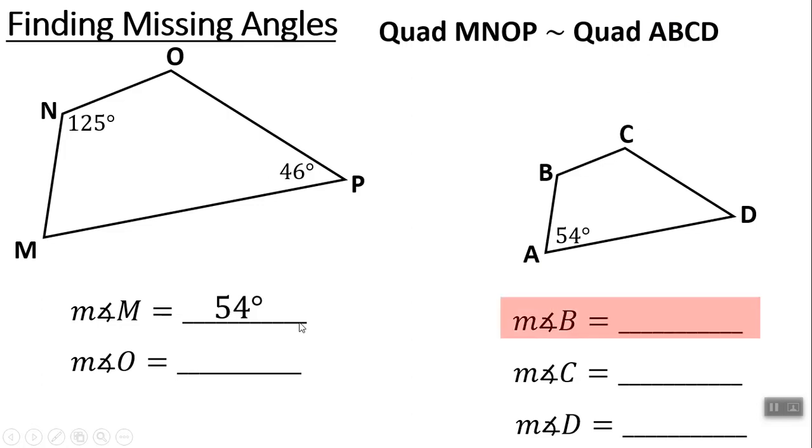Moving on. Now, we're going to look at angle B. We're going to look at angle B. Angle B corresponds with N. So here's B. Here's N. N is 125. B is going to be 125.